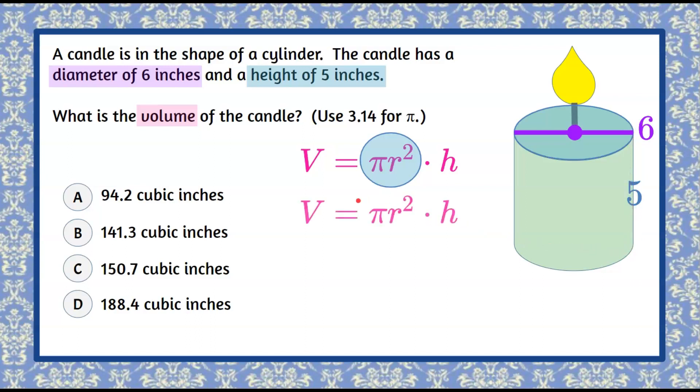Let's identify all the parts of our formula. For pi we're going to use 3.14. So let's rewrite this. We're going to replace pi with the value 3.14.